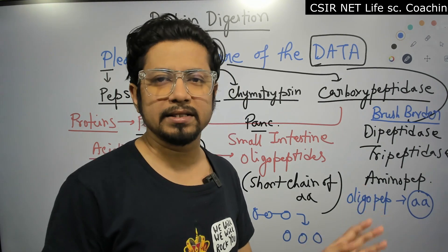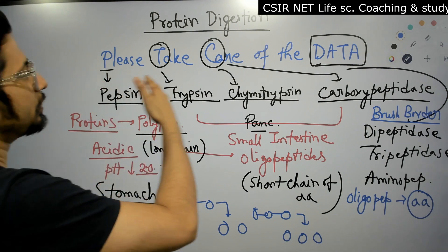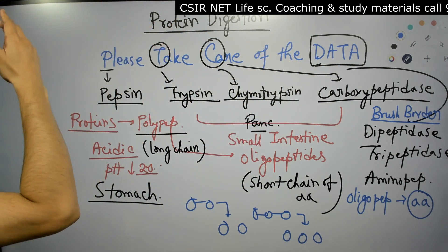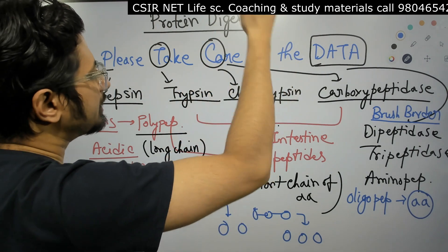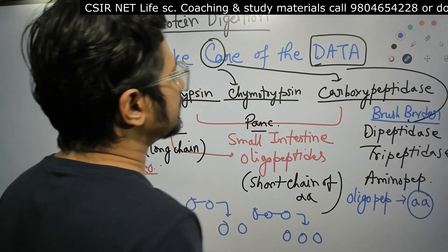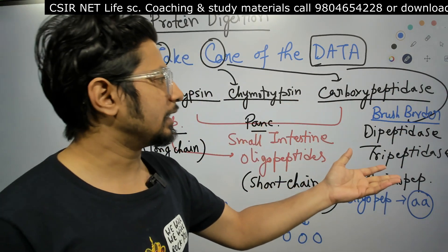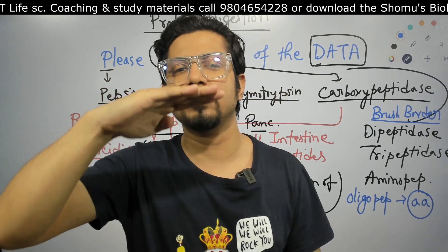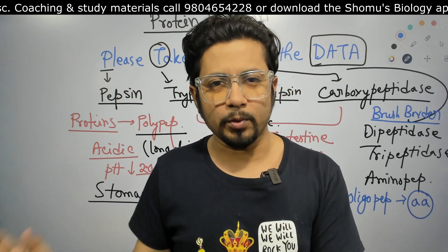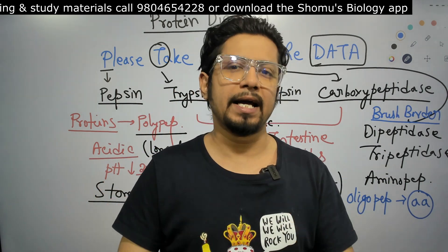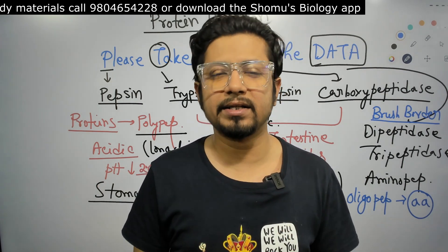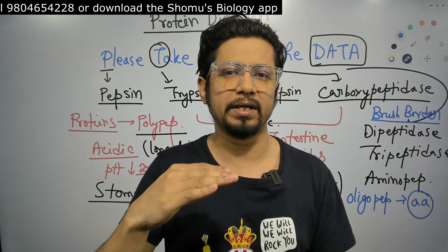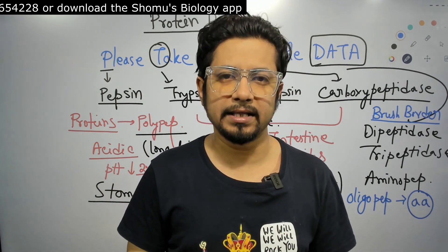So to recap: 'Please Take Care Of The Data' — P for Pepsin, T for Trypsin, C for Chymotrypsin, and Data for Dipeptidase, Tripeptidase, and Aminopeptidase. Protein digestion skips the mouth, starts in the stomach, and ends in the intestine. Compare this to carbohydrate digestion, which starts in the mouth, skips the stomach, and ends in the intestine; and lipid digestion, which occurs in all three — mouth, stomach, and intestine.